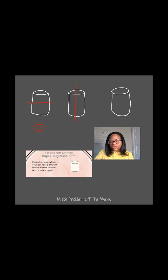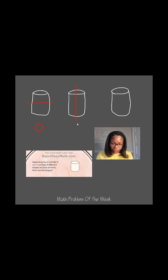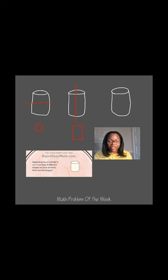The next cross section that could be made is created when the cylinder is cut in half vertically. If you were to open the cylinder and look directly into it, you would see two rectangles. So the second cross section shape you could create by making a cut in a cylinder is a rectangle.